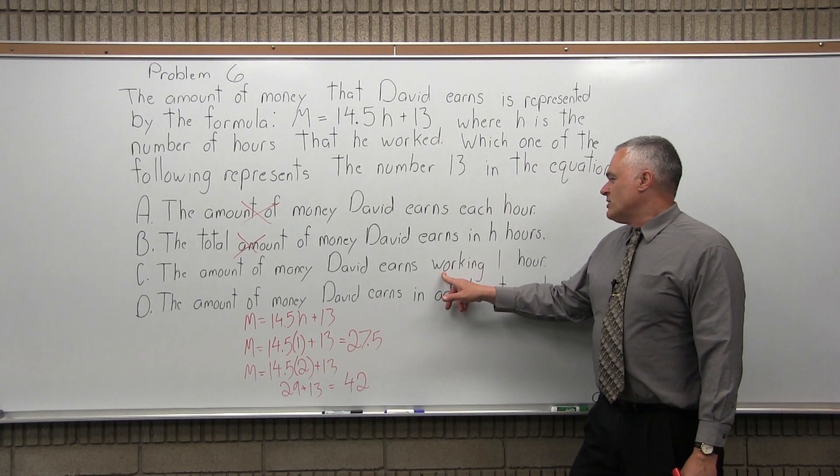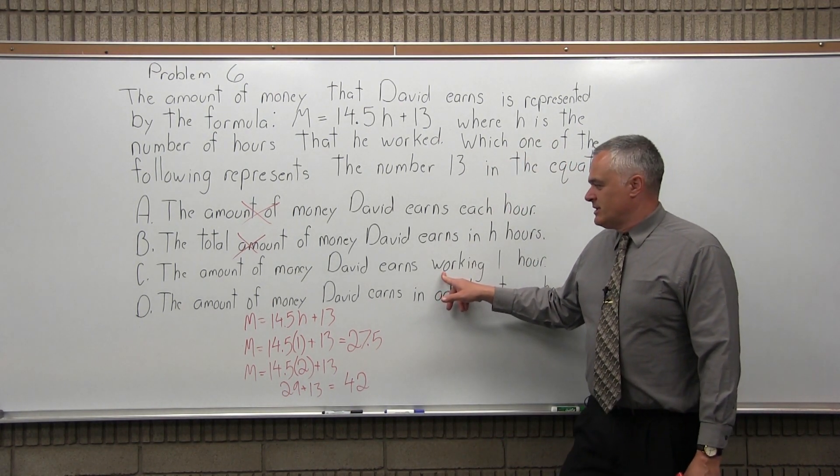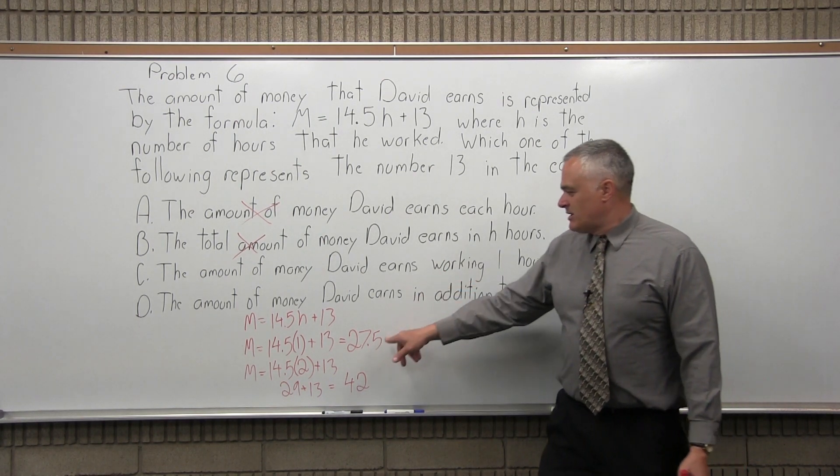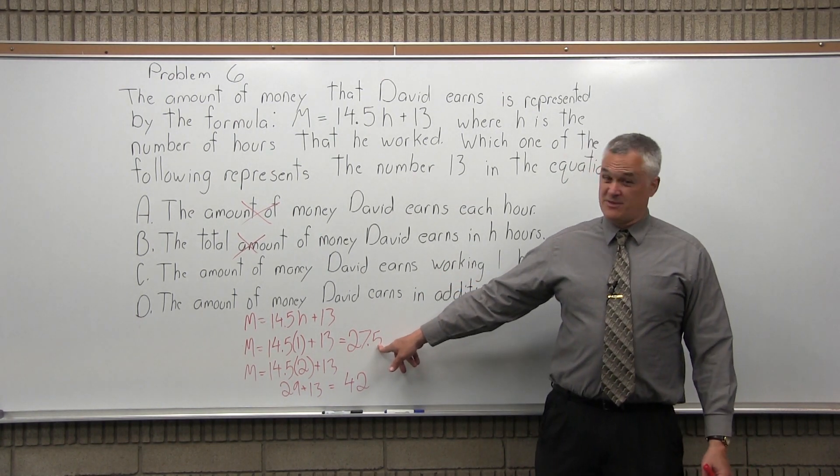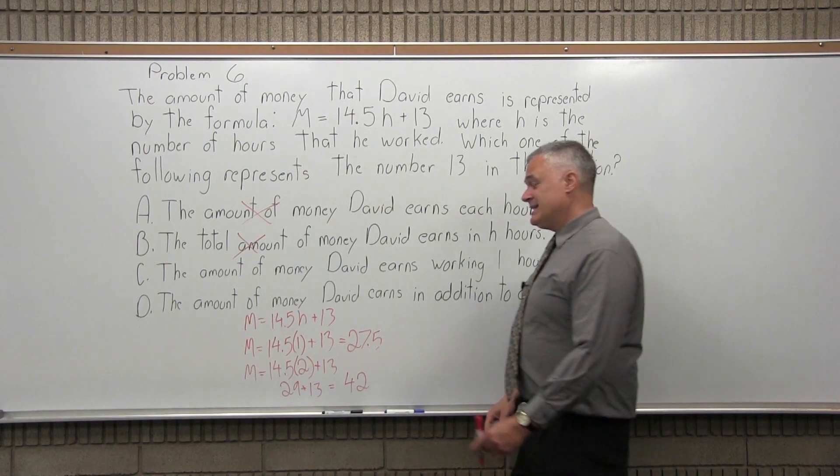C, the amount of money that David earns working one hour. Could that be what the 13 is? Well, if he works for one hour, he gets 27 dollars and 50 cents, which is not 13. So it's not C either.